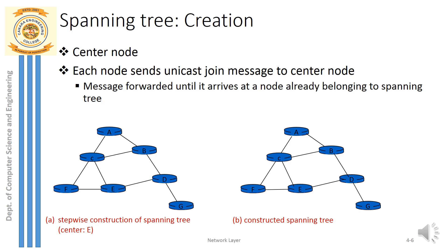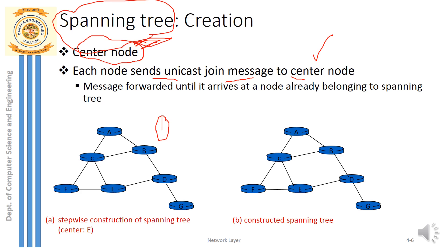The challenge now is how to construct a spanning tree. There are multiple methods; the first is the center node method. Each node sends a unique 'has-join' message to the center node. The message is forwarded until it arrives at a node already belonging to the spanning tree.